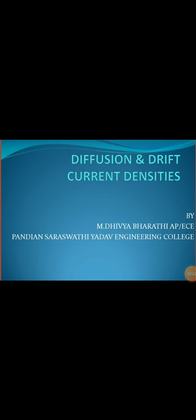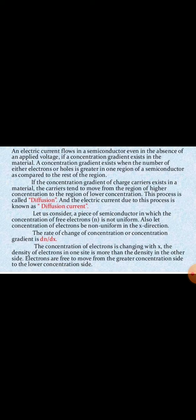Good morning students. Today we are going to discuss diffusion and drift current densities. We know about the creation of negatively charged electrons and positively charged holes in semiconductors. When these charged particles move, a current is generated — these charged electrons and holes are referred to as carriers. The two basic processes that cause electrons and holes to move in a semiconductor are called drift and diffusion.